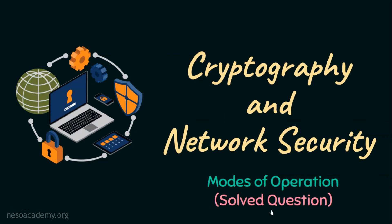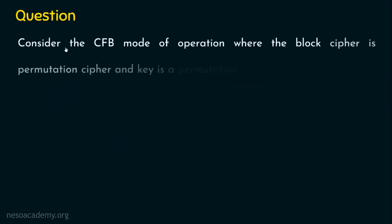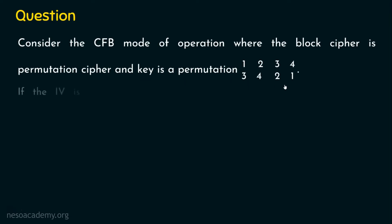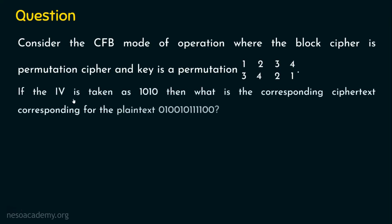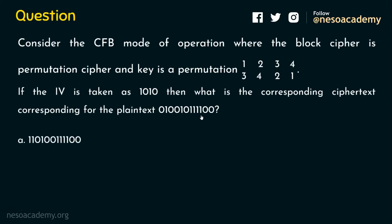So far, we have seen the various modes of operation. In this presentation, we will solve a question on modes of operation. The question is: consider the CFB mode of operation where the block cipher is a permutation cipher and the key is a permutation which is given. If the initial vector is taken as 1010, then what is the corresponding ciphertext for the given plaintext? We are required to find the ciphertext.